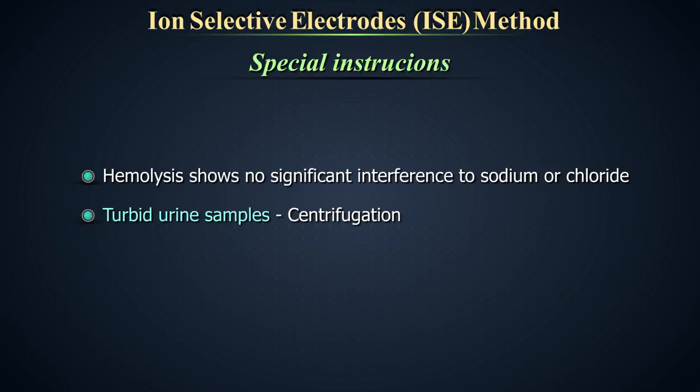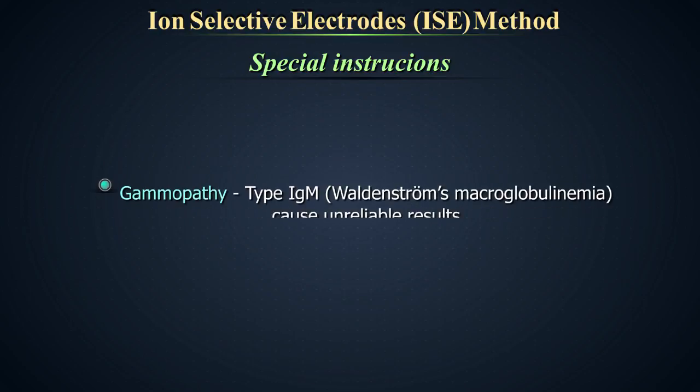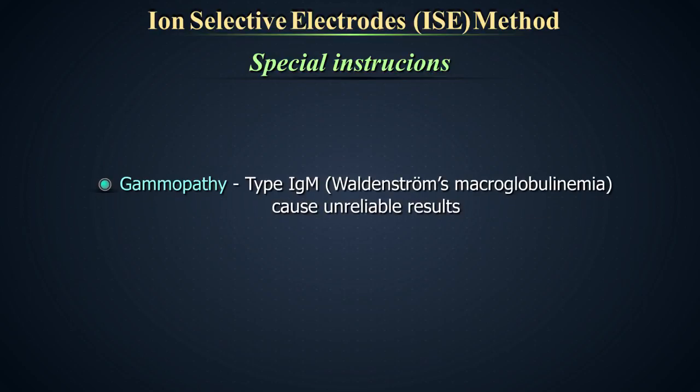Turbid urine samples should be cleared by centrifugation. In very rare cases, gammopathy, in particular type IgM gammopathy may cause unreliable results.